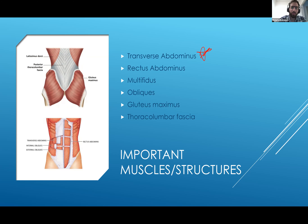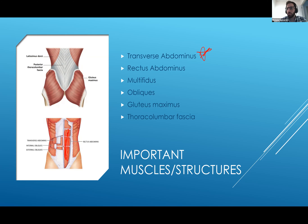Your rectus abdominus is that large muscle many people know as their six-pack — the beach muscle. It's a very strong part of your core, helping control reaching down and touching your toes, and it contributes to stability of your lumbar spine. It's the most superficial core muscle that most people see.